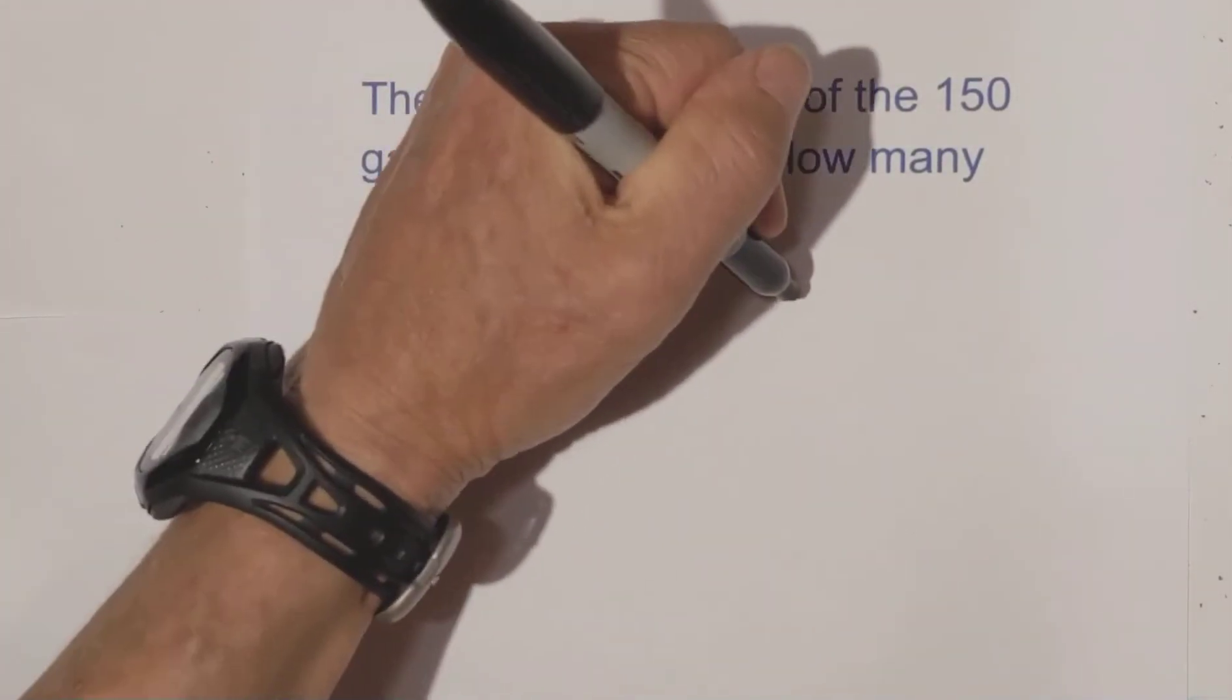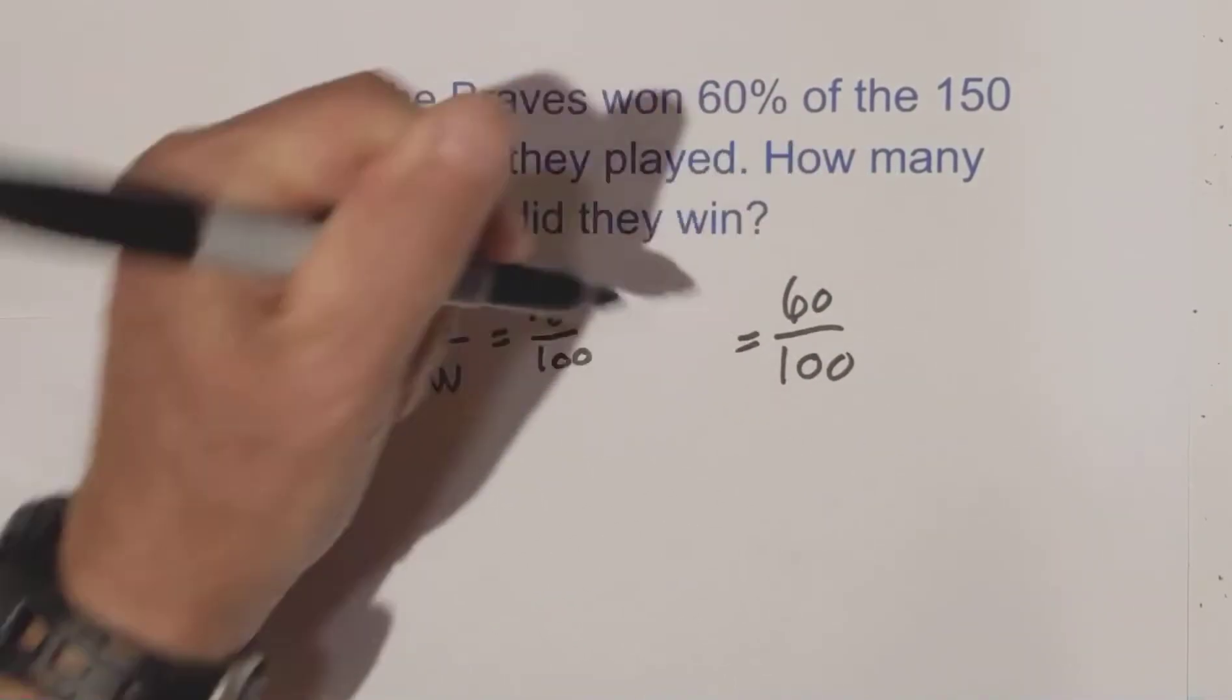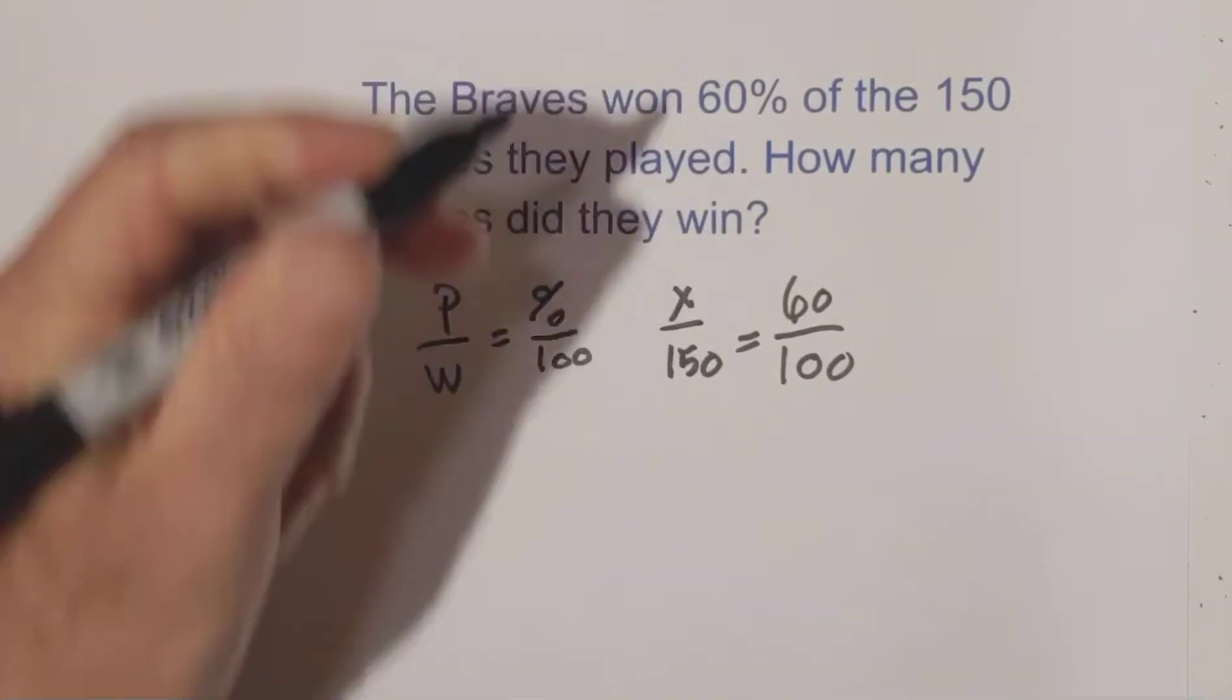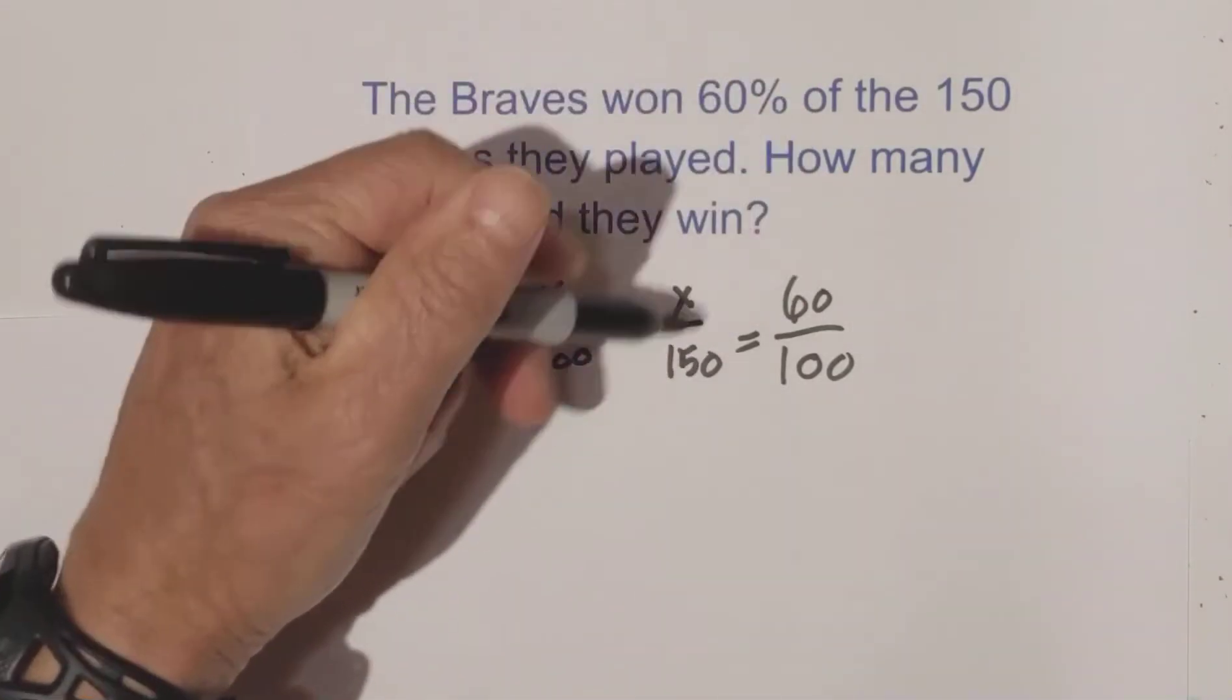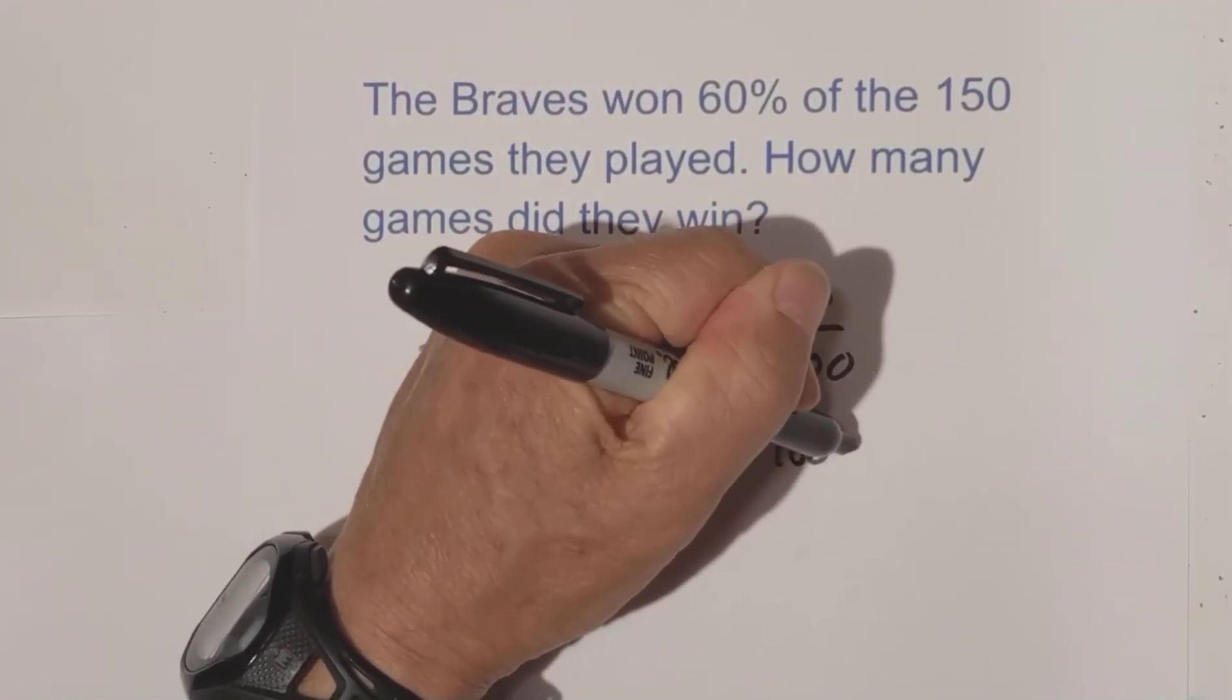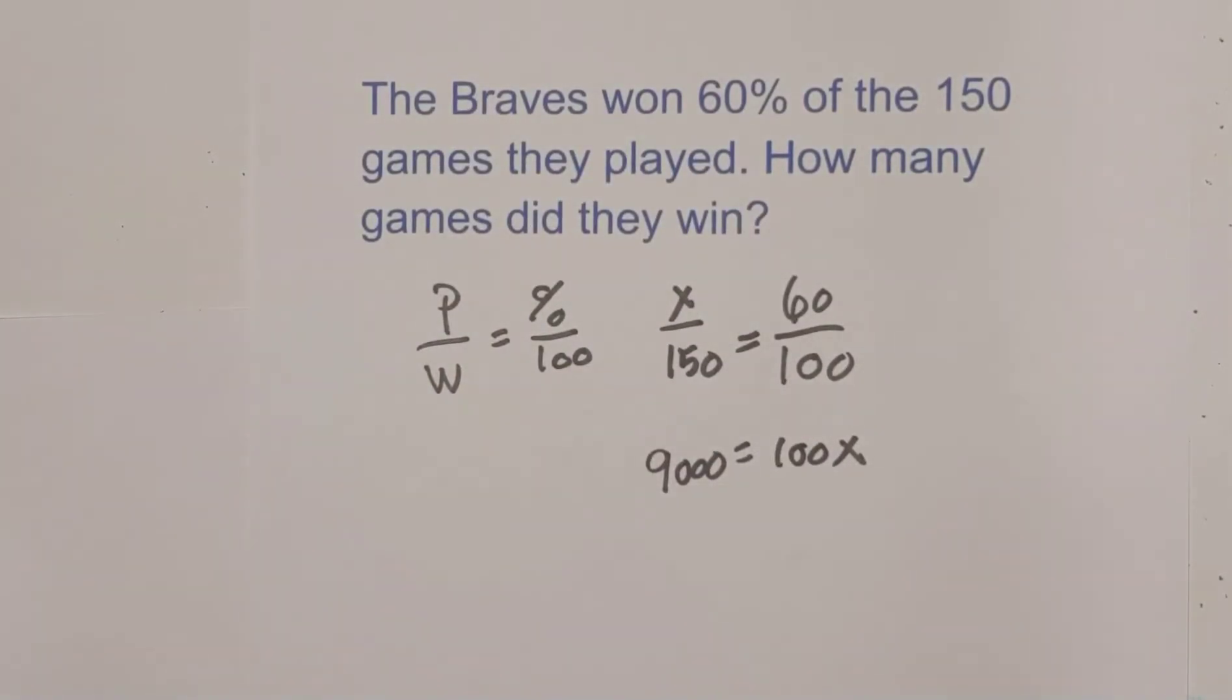Well, we know we're given the percent. So we have 60% over 100 equals, and 150 that is the whole, and so we're going to try to find x. So now all we do is we do a cross multiplication.